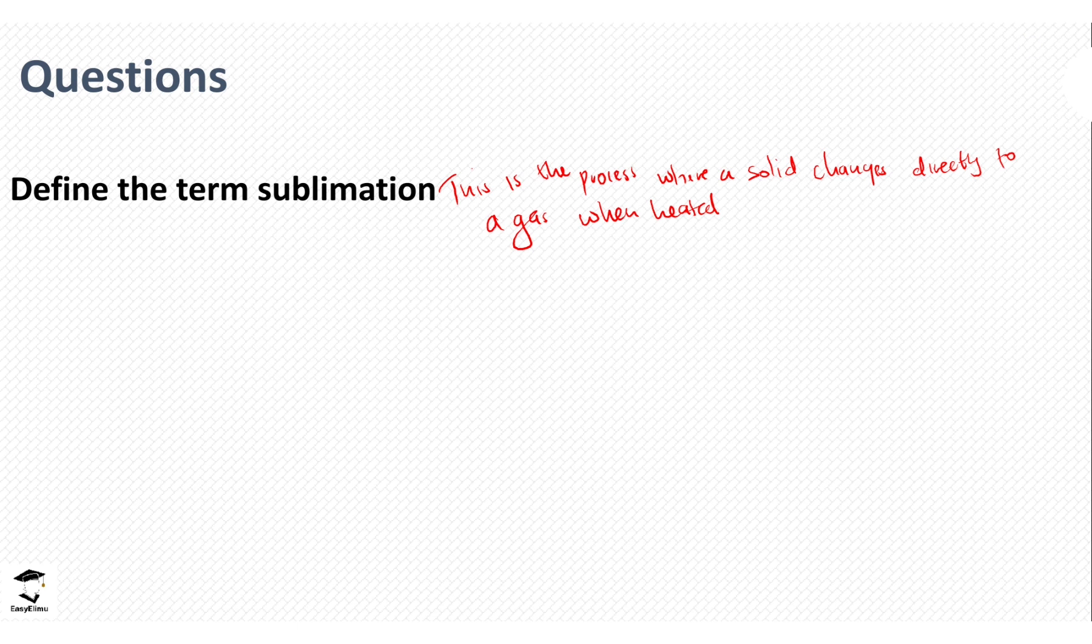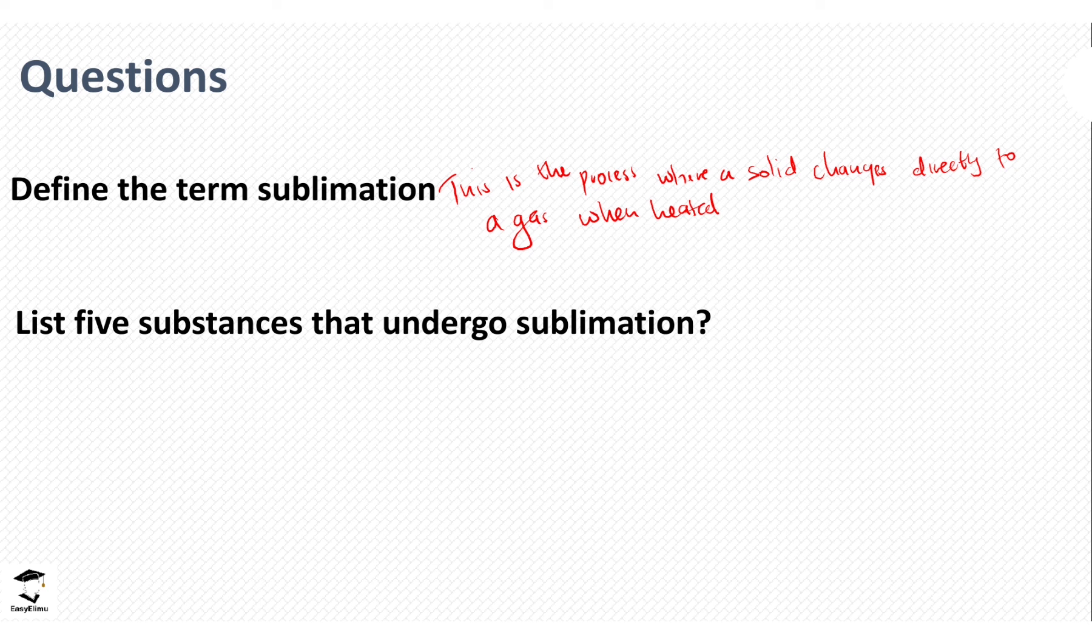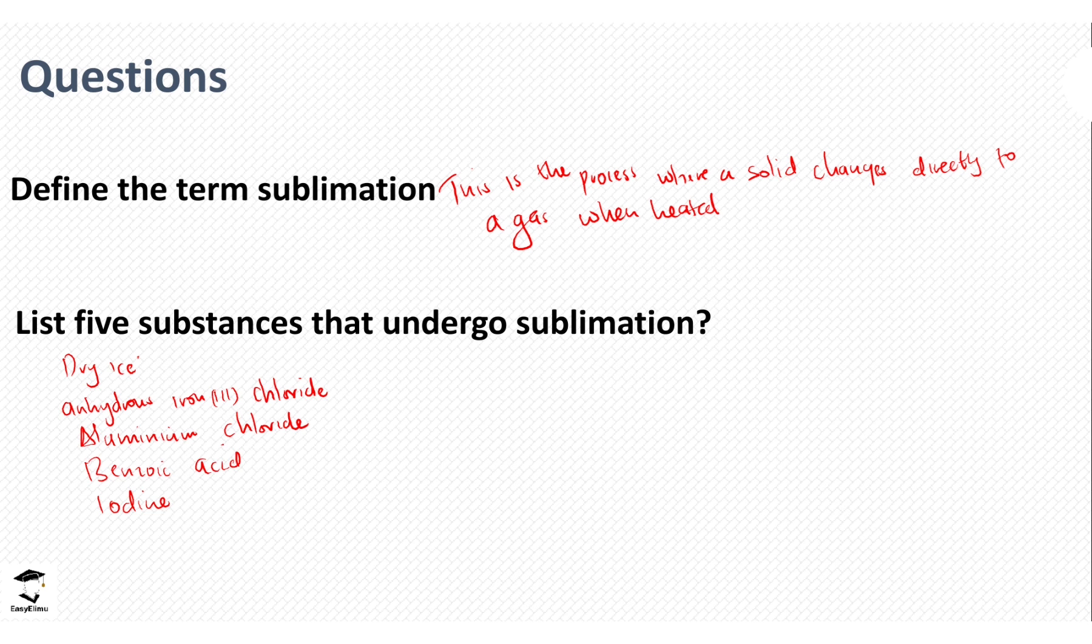The next question is, list five substances that undergo sublimation. So we have iodine, anhydrous iron-3 chloride, aluminium chloride, dry ice, and benzoic acid. Those are the substances that undergo sublimation.